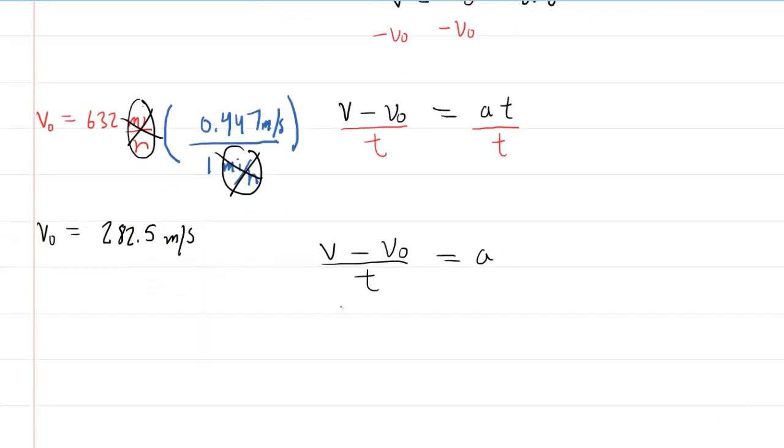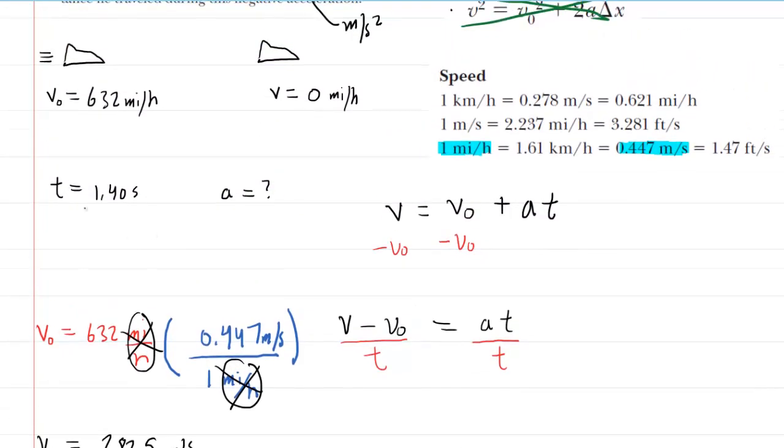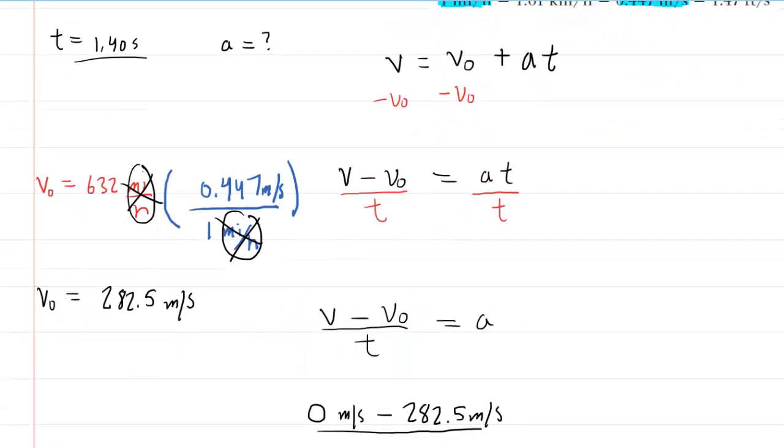So back to our acceleration calculation. The final velocity was 0 meters per second minus the initial velocity, which we've just converted. And then divided by the time interval, which I believe was 1.4 seconds. Yes, it was. So we'll put that in as well.